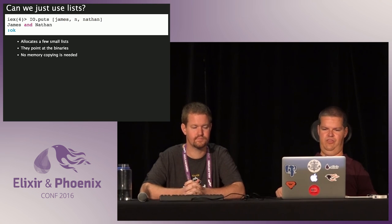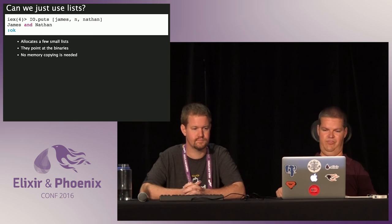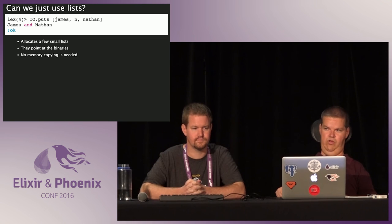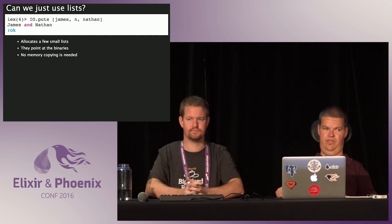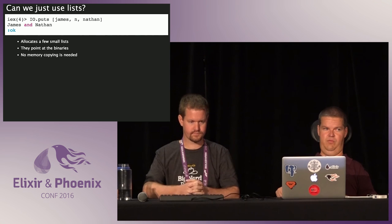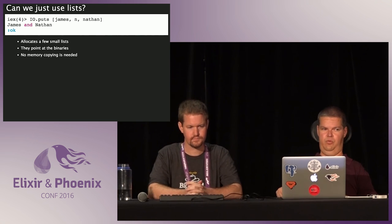Elixir lets us instead use lists. We could send the data to puts via a list. In this case, we're not actually building a fourth string — we are allocating some small pointers for the list, and they in turn point directly at the existing binaries. So we didn't have to copy memory around. A linked list is a head that points at some data and a tail that typically points at another list.